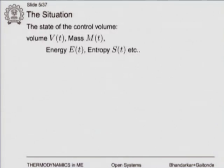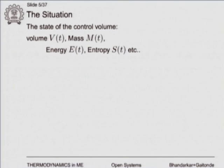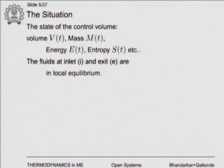The control volume has volume V, mass M, energy E, and entropy S — and as shown with the time parameter t, all of these could be changing with time. So volume, mass, energy, and entropy are all functions of time.